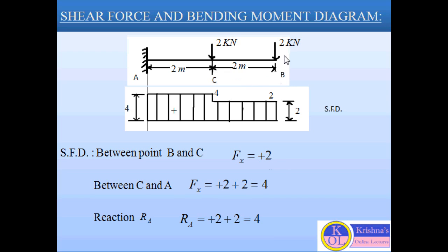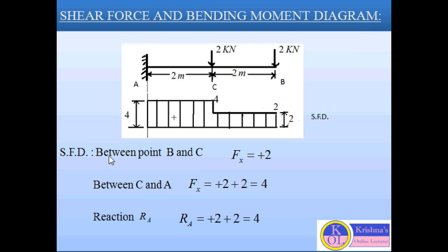So the shear force between point B and C is plus 2. Now for the shear force between point C and A, we consider the forces at both B and C: 2 plus 2 equals plus 4, and since there is no other force after C, it remains constant up to point A. So we now have the shear force at each point of this cantilever beam and can draw the shear force diagram.